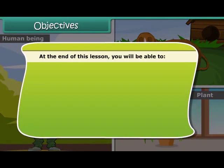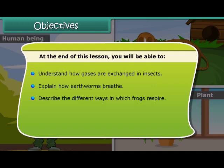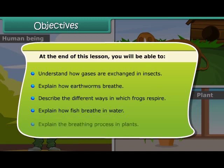Objectives: At the end of this lesson, you'll be able to understand how gases are exchanged in insects, explain how earthworms breathe, describe the different ways in which frogs respire, explain how fish breathe in water, and explain the breathing process in plants.